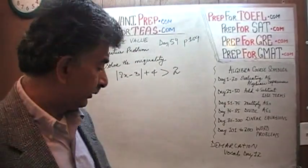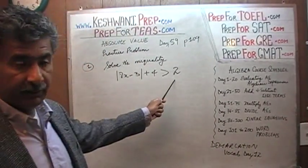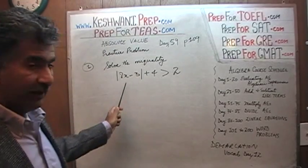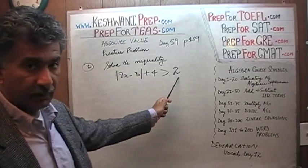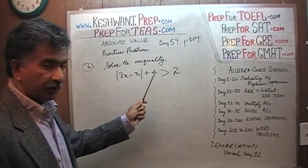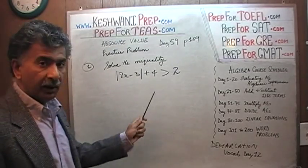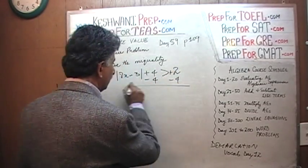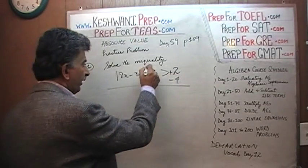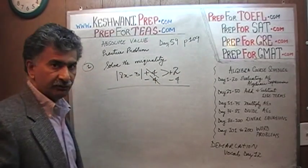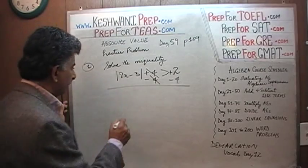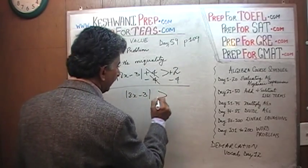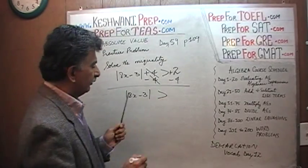The very first thing we need to do is bring everything on this side that is not inside the absolute value sign. Anything not in the absolute value sign has to be brought over immediately. We need to bring the 4 over by subtracting 4 from both sides. This positive 4 and negative 4 cancel out, and we end up with |8x − 3|. On the right side, positive 2 minus 4 gives us negative 2.